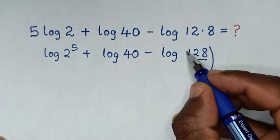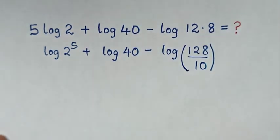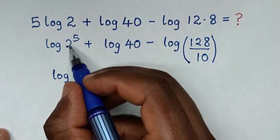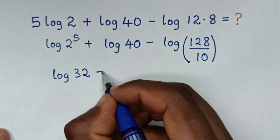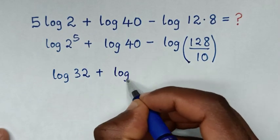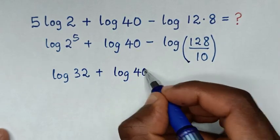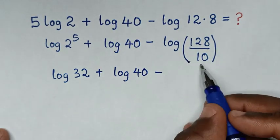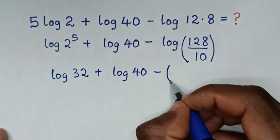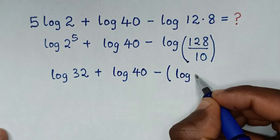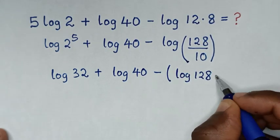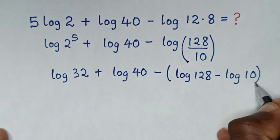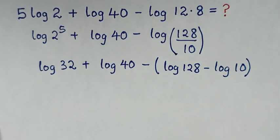Then in the next step, it will be log of 2 to the power of 5, which is 32, then plus log of 40, then minus — log of 128 over 10 is the same as log of 128 minus log of 10.